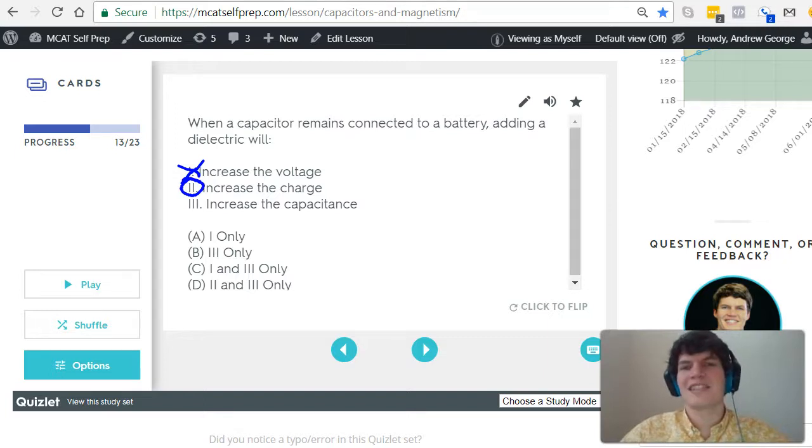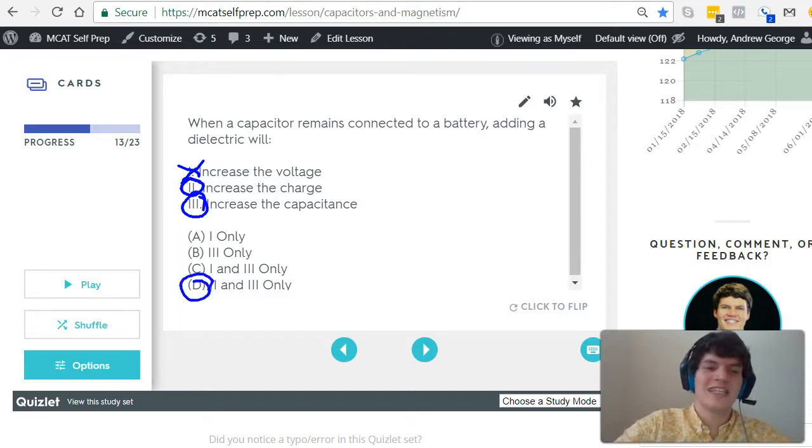What about the capacitance? Well, the capacitance of a capacitor is its ability to build up charge. Therefore, capacitance definitely increased. Thus, the best answer choice here is answer choice D, two and three.